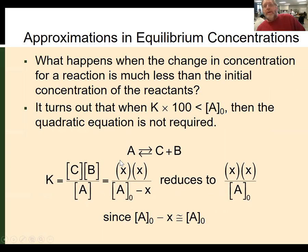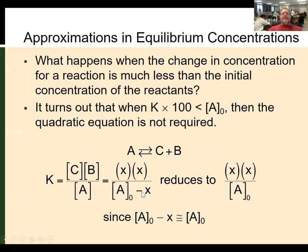There are times where even though we could use the quadratic equation, we can simplify things. If K times 100 is less than the initial concentration, we can make an approximation: the initial concentration A₀ isn't significantly changed when we subtract X from it, so X is not significant. We make the approximation that the minus X is negligible and just use A₀ in its place.